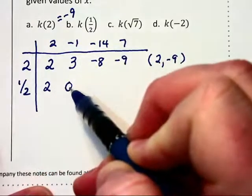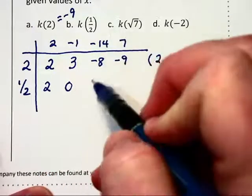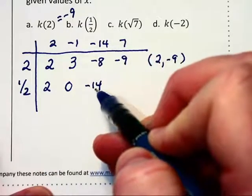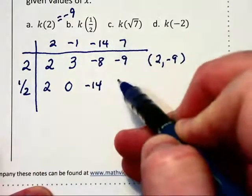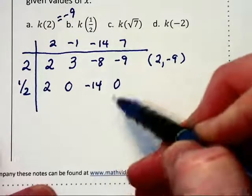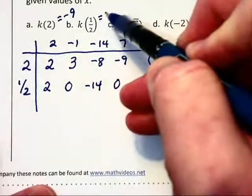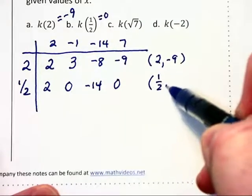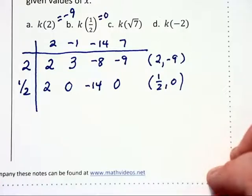1 half times 0 is 1 half minus that 14 is negative 14. And 1 half times negative 14 is negative 7 plus the 7 at the top is 0. That means k of 1 half up there is equal to 0. And the graph would go through 1 half comma 0 if we were to graph k of x.